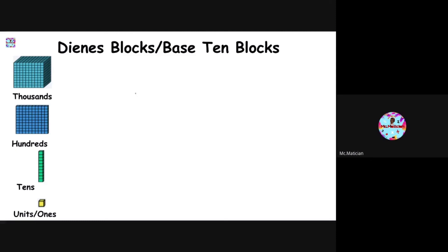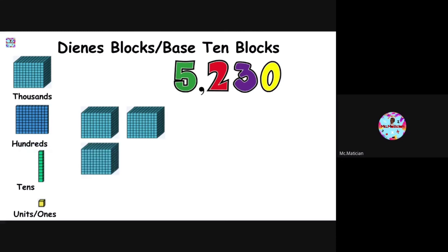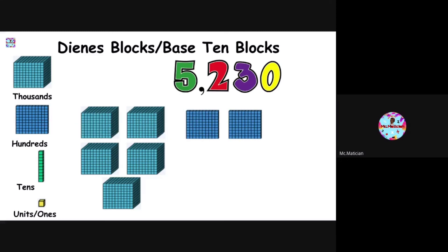Now try this one: five thousand, two hundred, thirty. Five thousand blocks, two hundred blocks, and three tens. That's right — no units. We have no ones.